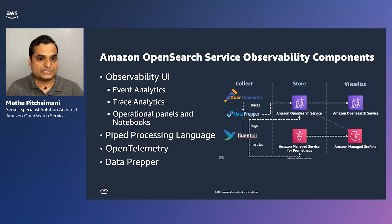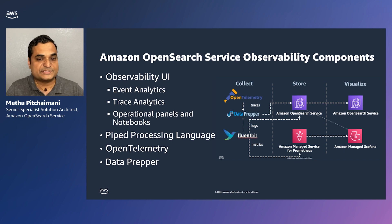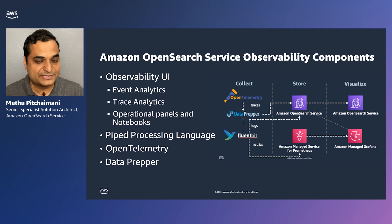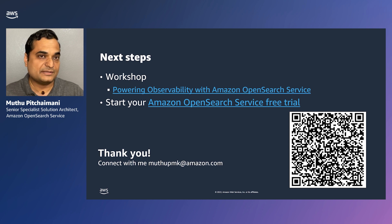Here is an architecture that shows you how you can collect these data with different components, store them, and then visualize them. For storing, you have a couple of options with Amazon OpenSearch Service and Amazon Managed Service for Prometheus. For visualization, again, you have a couple of options with Amazon OpenSearch Service and Amazon Managed Grafana. I hope this has been useful in getting introduced to what observability is and what the different components are in Amazon OpenSearch Service. As a next step, you have a lab that you can go play around with to build these components for yourself. Thank you so much.